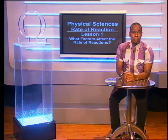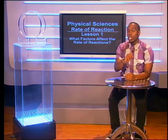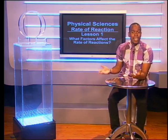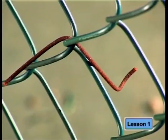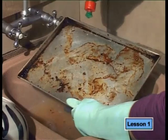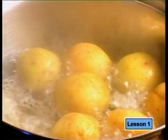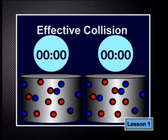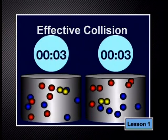Hello Grade 12s. Today we are going to look at the rates at which chemical reactions take place. We'll also see what brings about these different rates. Chemical reactions happen all around us every second of the day. In every chemical reaction, the reactants that are present at the start change into products. We explain chemical changes using the collision theory.